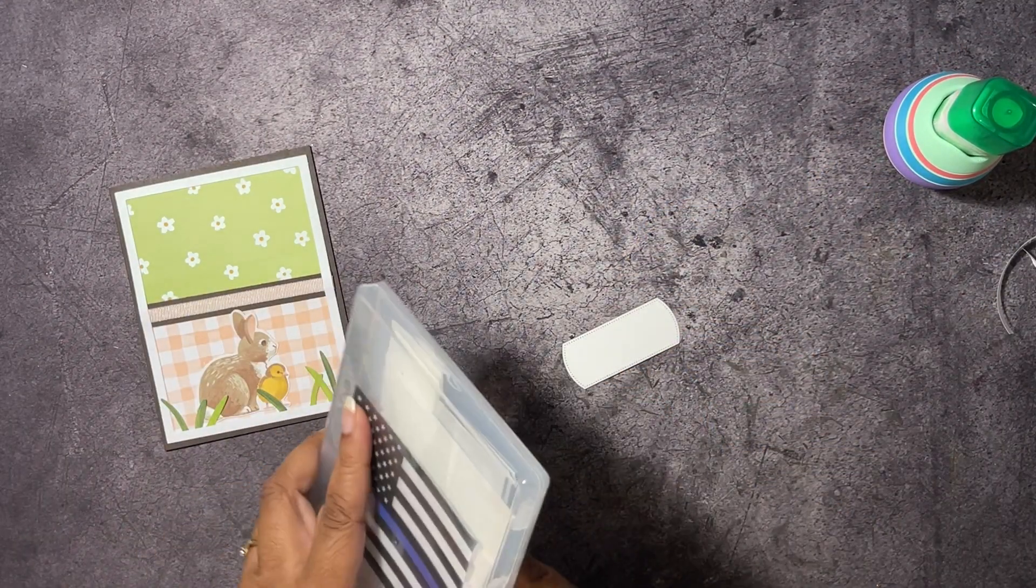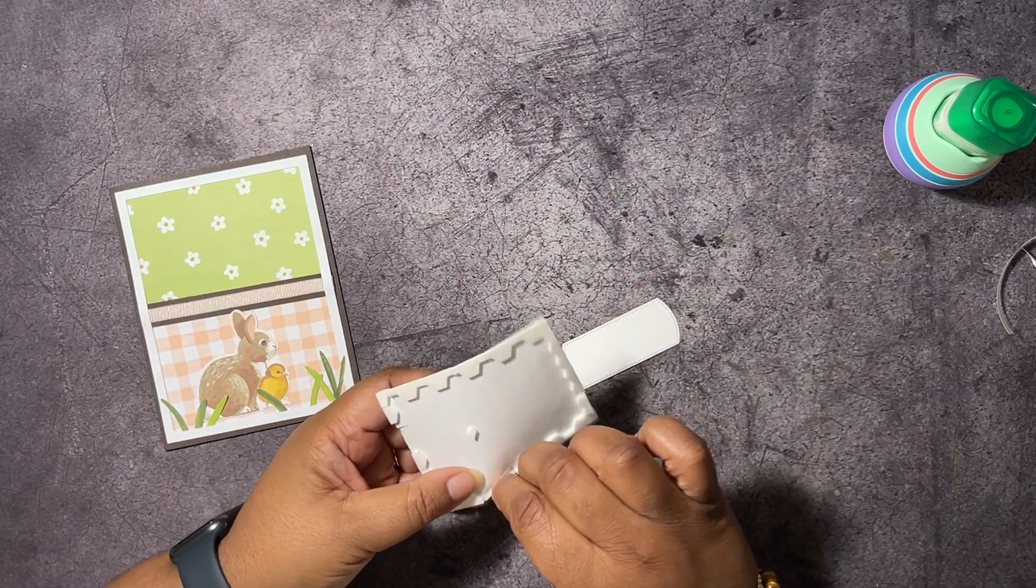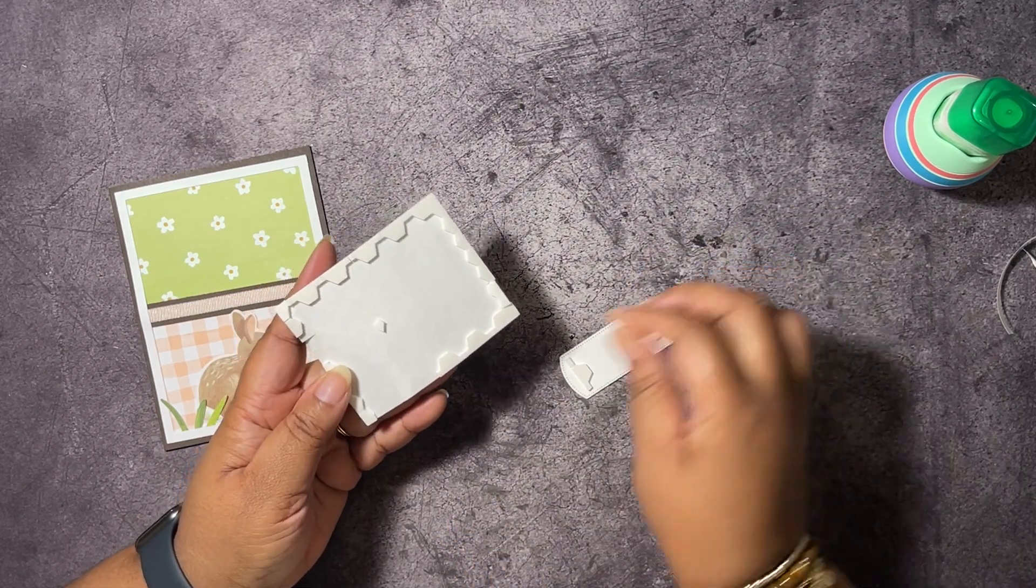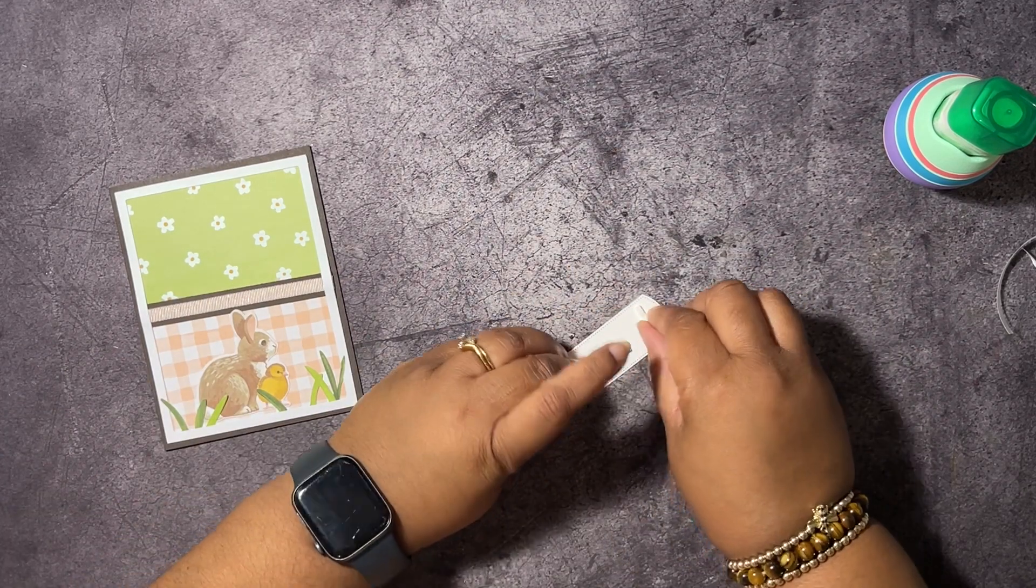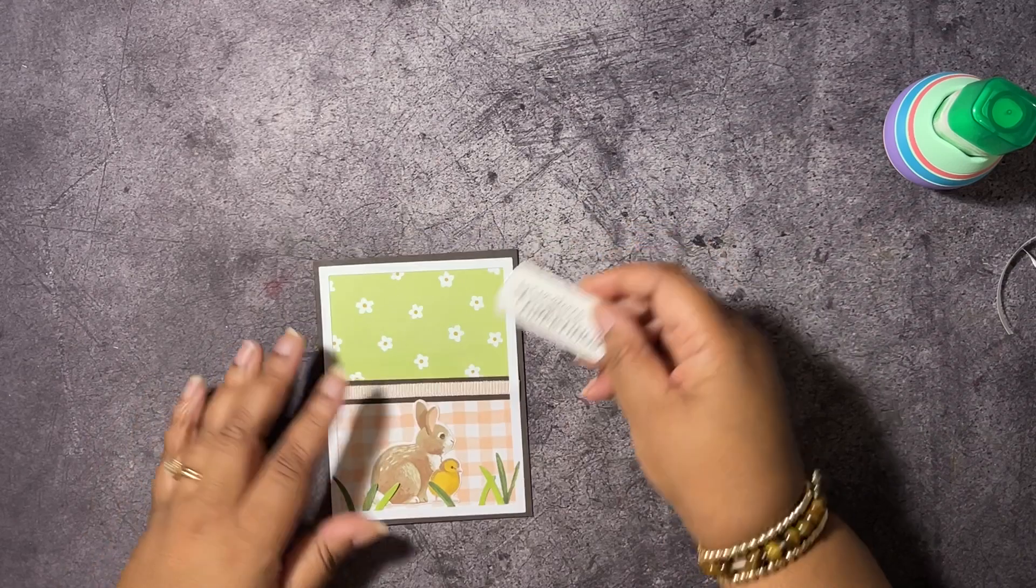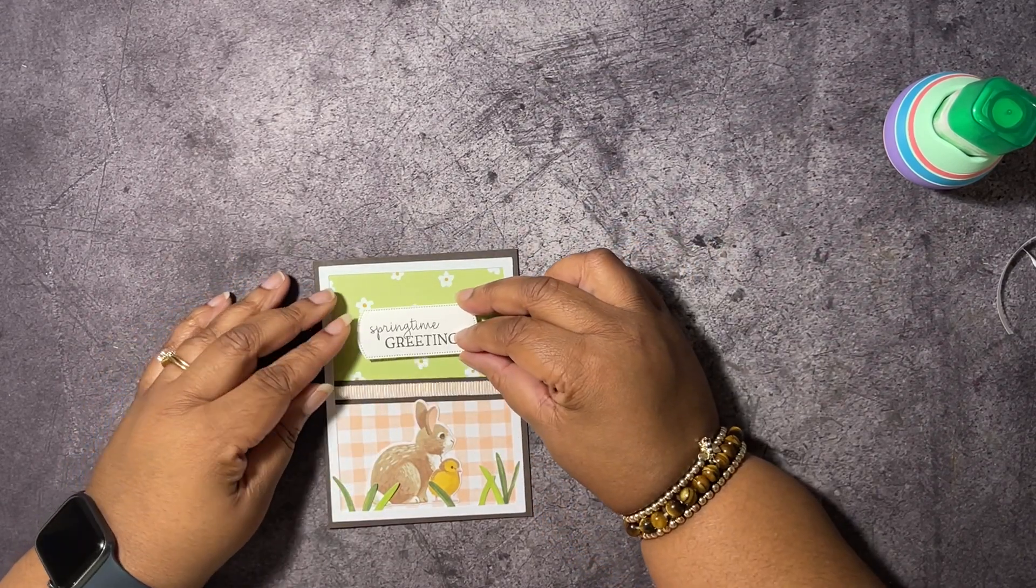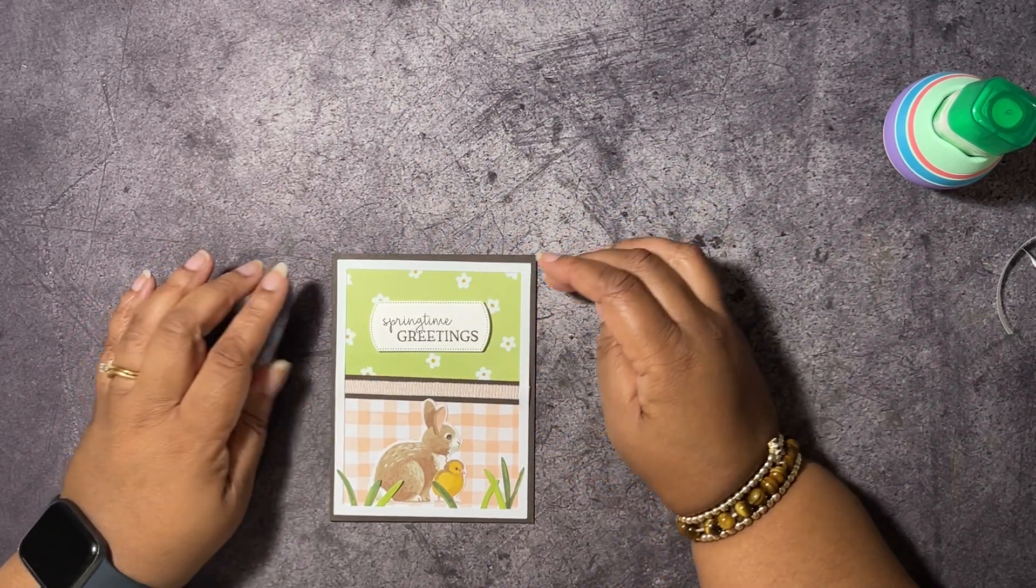Then we are going to put some stamping dimensionals on the back of our sentiment label here. Use some of my little edge pieces. We're going to pop this up at the top in the middle.